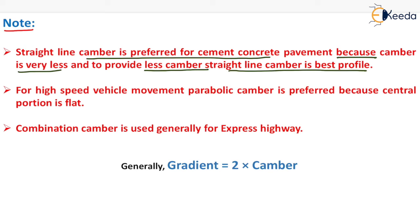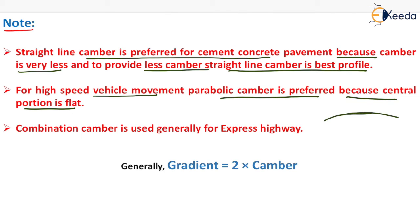For high speed vehicle movement, parabolic camber is preferred because the central portion is flat. In parabolic camber the central portion is generally flat, that's why it is preferred for high speed vehicle movement. Combination camber is generally used for express highways.